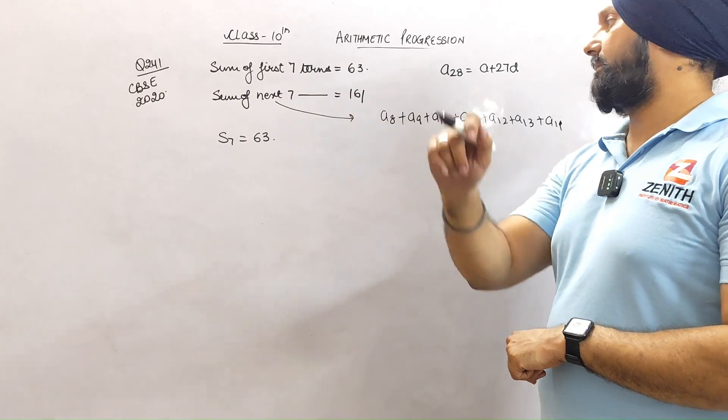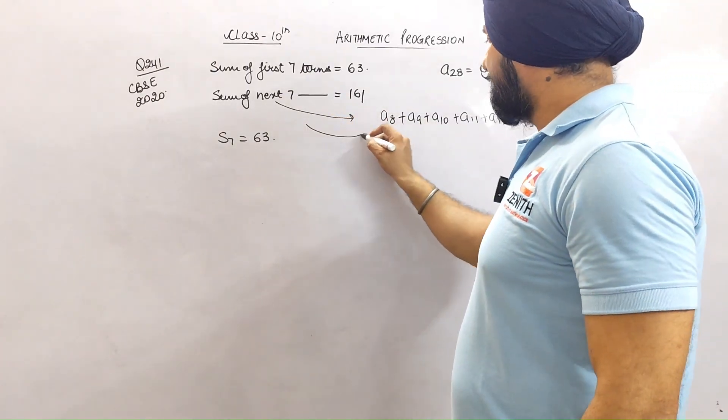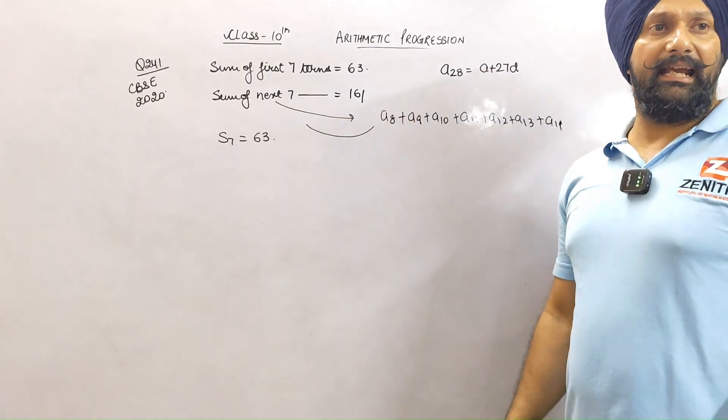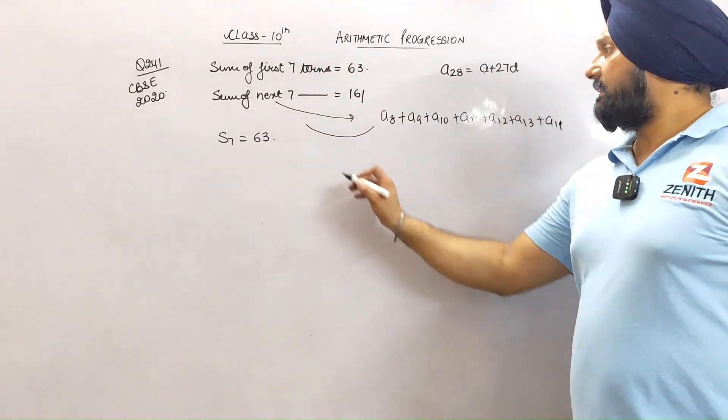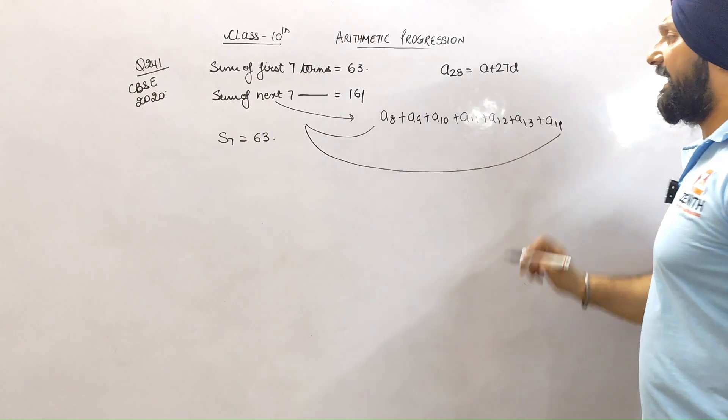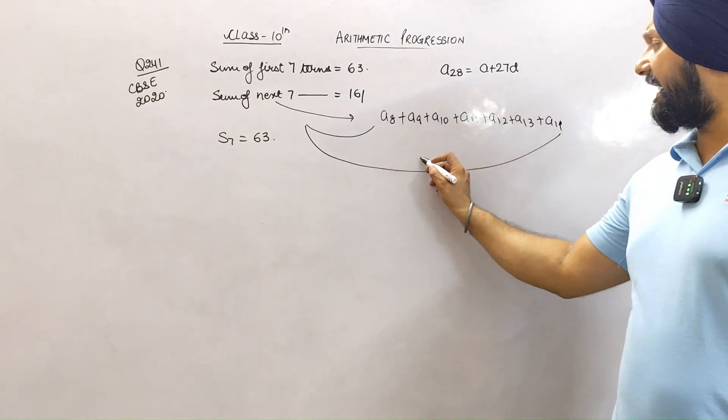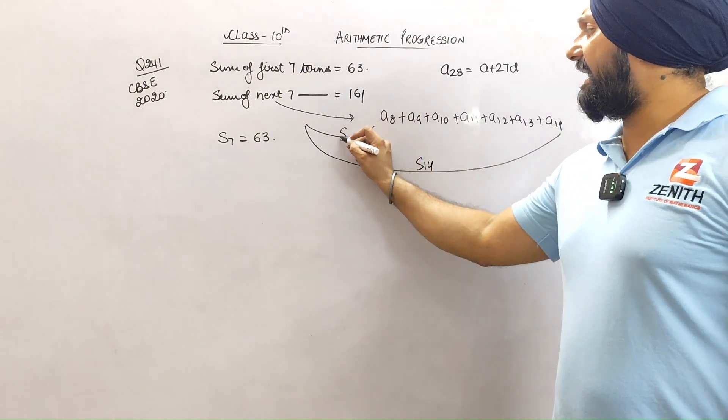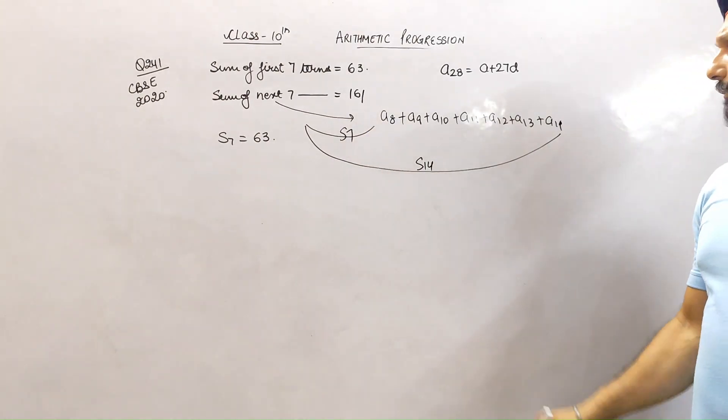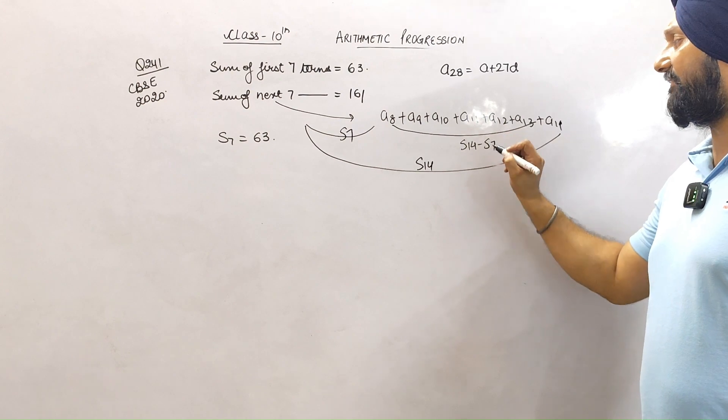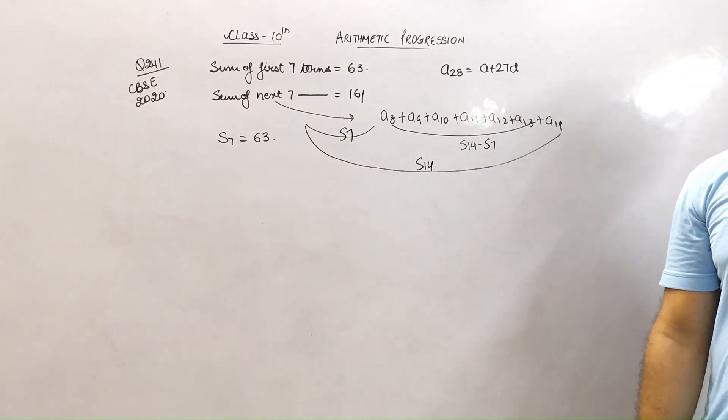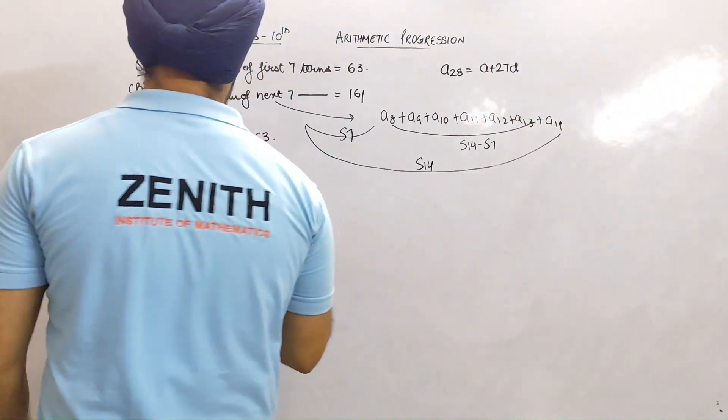Very good. Pay attention and understand. From a1 to a7, that's S7. From a1 to a14, that's S14. So these terms are S14, and these are S7. So can I call these terms S14 - S7? Yes or no? So in the question, what's given? S14 - S7 = 161.